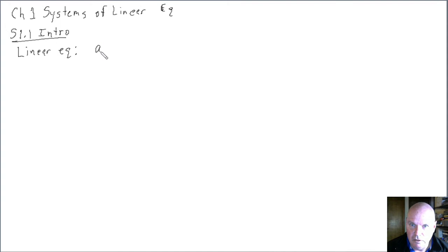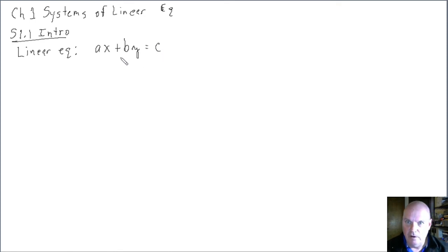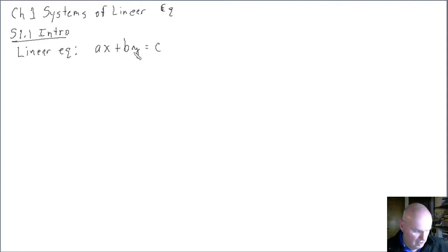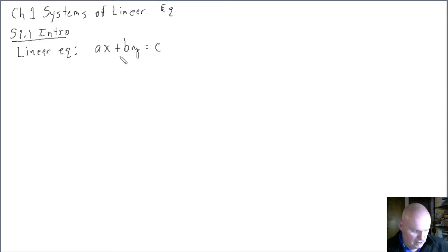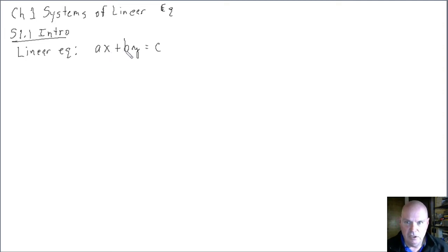So a linear equation — here's an example of a linear equation with two unknowns. The unknowns, using standard notation, are x and y. This is a second-order linear equation; again, the unknowns or variables are x and y. The coefficients are a and b, and the constant term is c.